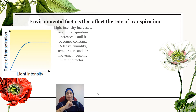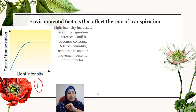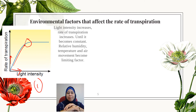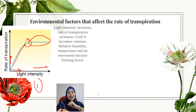Now we look at the environmental factors that affect the rate of transpiration. The first environmental factor is light intensity. From the graph, we can see that as light intensity increases, the rate of transpiration also increases until it reaches a point where the rate of transpiration becomes constant even though light intensity increases. At that point, the relative humidity, temperature, and air movement will become the limiting factors.